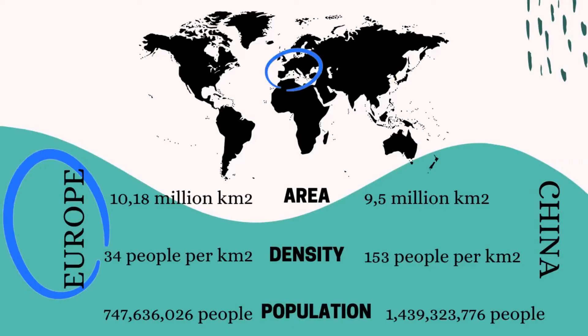Currently, India and China are the most populated countries in the world. The continent of Africa is expected to experience very rapid population growth, whereas Europe's population is expected to shrink. You can see that population density varies widely across different countries and continents. Population distribution and population density are affected by various factors, which I will get into in a future video — so be sure to watch part two of this video series. See you in my next one!